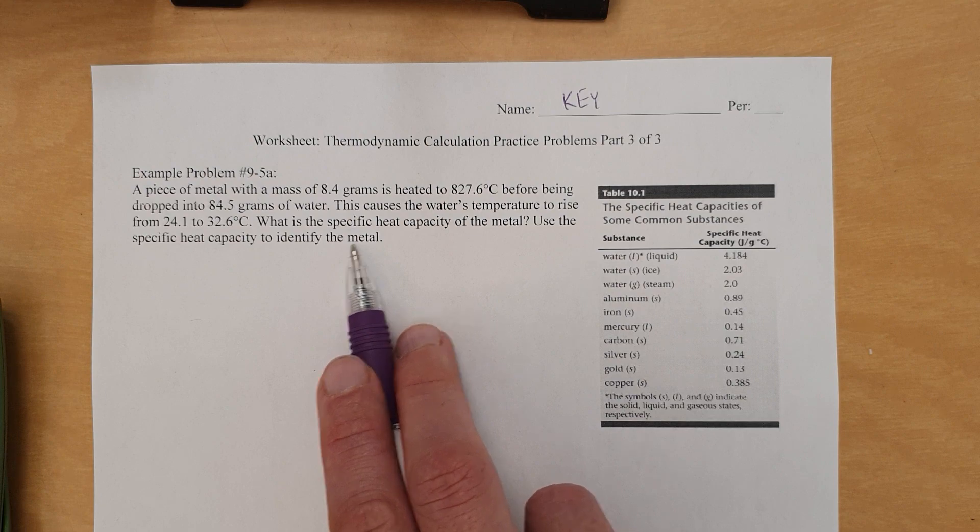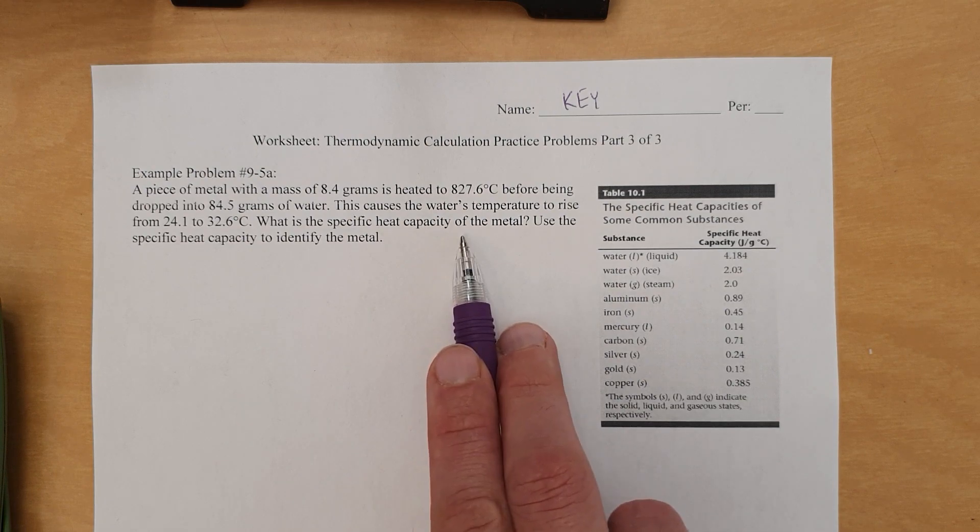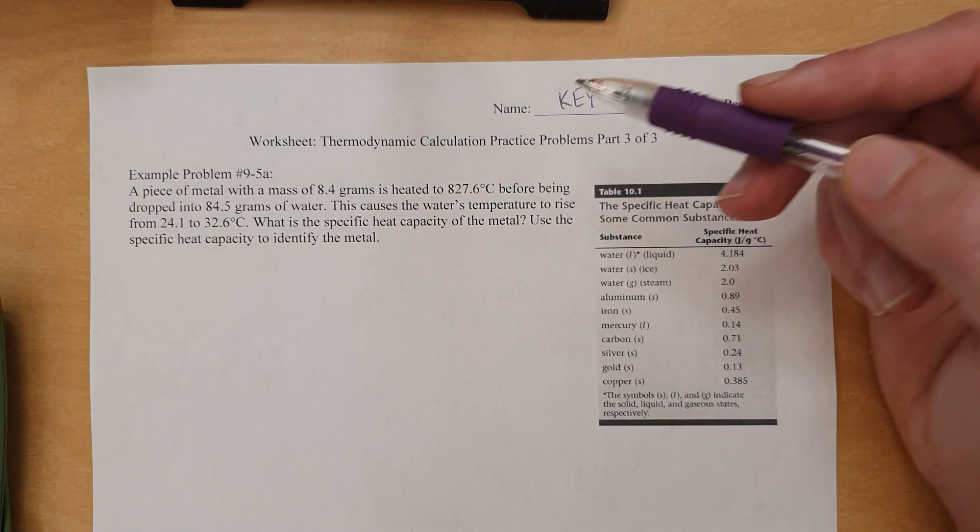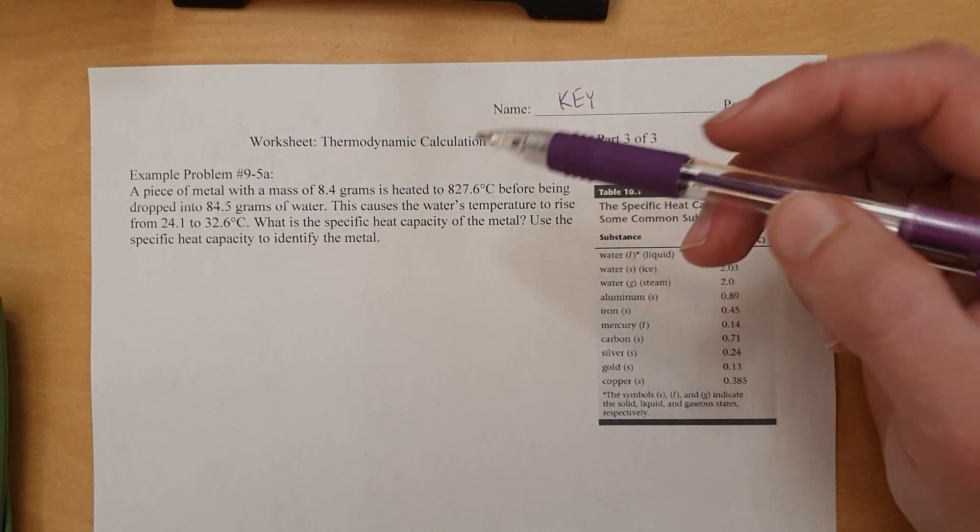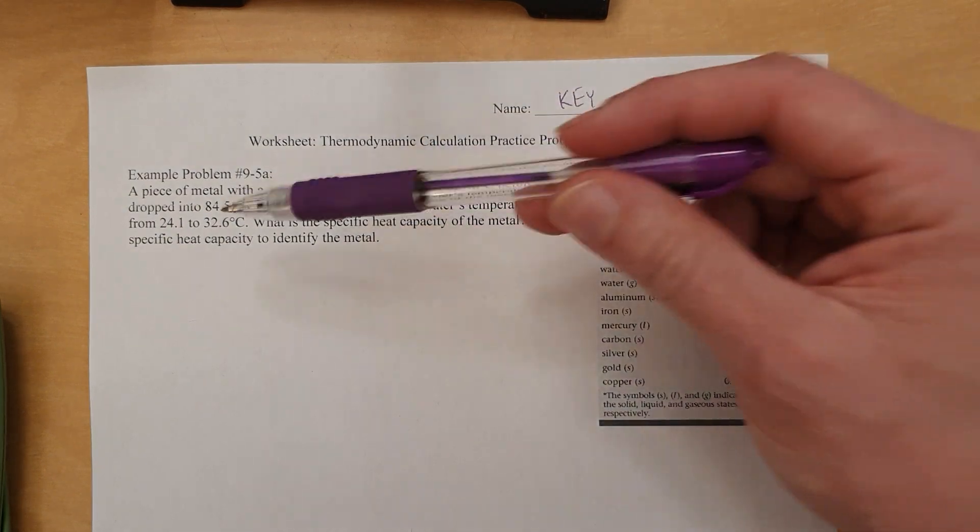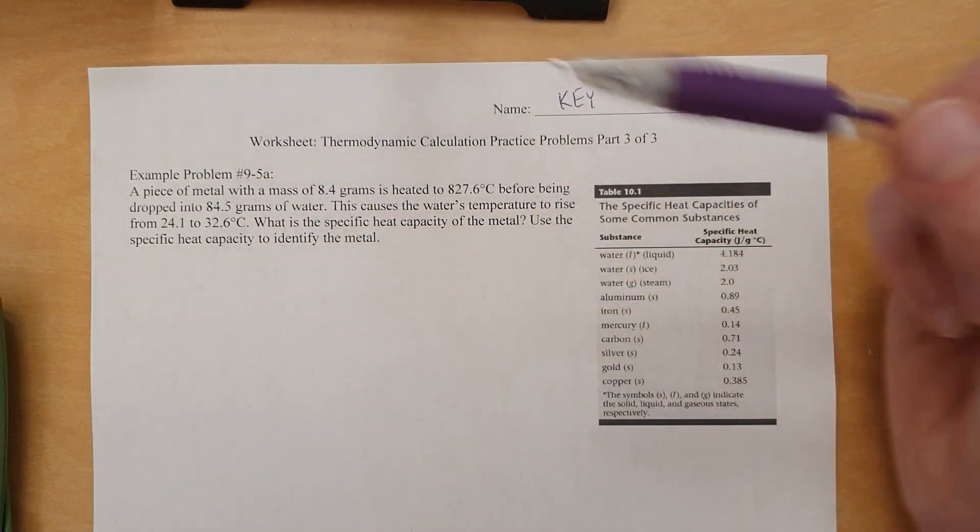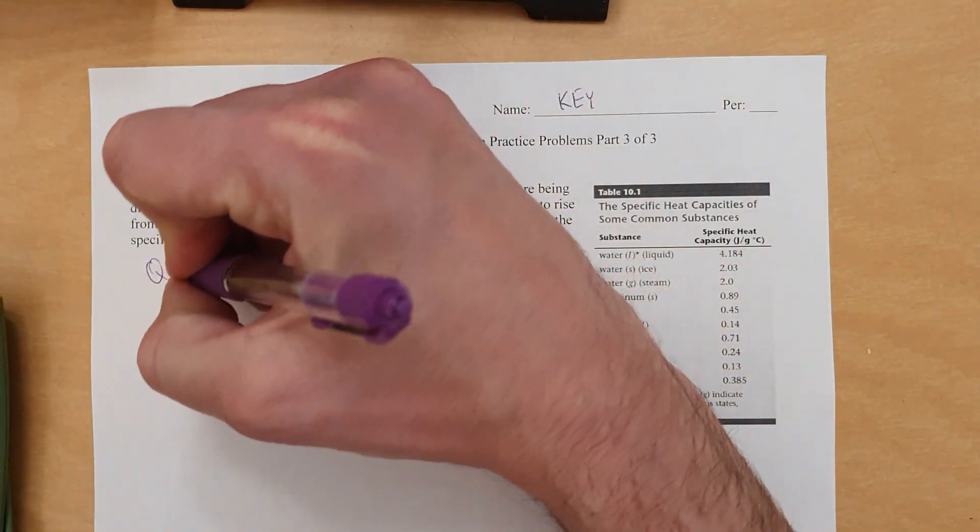We're going to use it to identify the metal as well. So we're going to make sure our box contains both the specific heat capacity of the metal and its identity. Anyway, we know we're going to use Q equals MC delta T because we're talking about energy and there's changes of temperature involved.